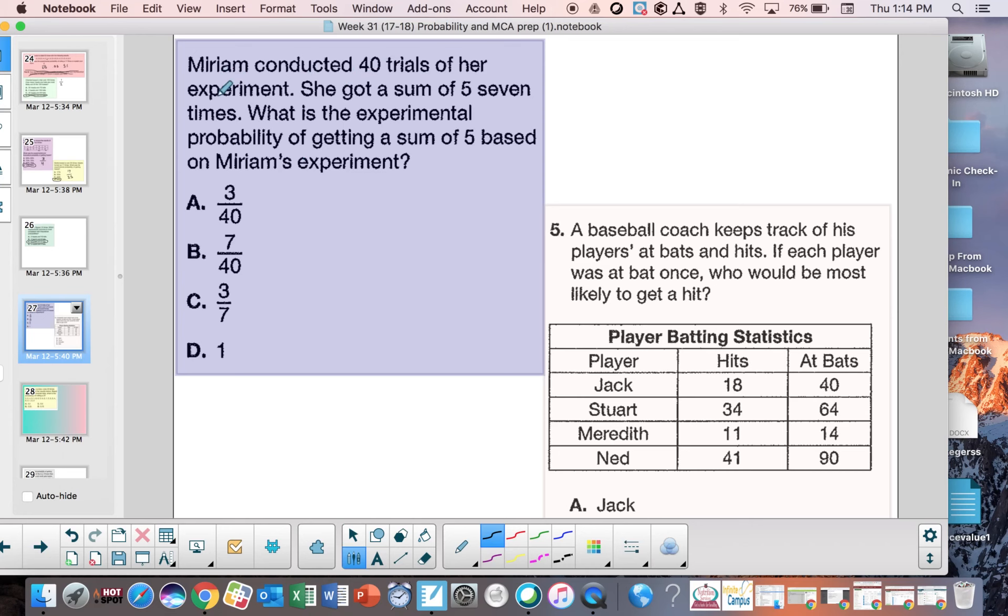Miriam conducted 40 trials of her experiment. She got a sum of five seven times. What is the experimental probability of getting a sum of five based on Miriam's experiment? Well, she did 40 trials, so I know that's the total number of times it happened. It says here, I want to read carefully, she got a sum of five, but it happened seven times. That's the key. So the experimental probability of getting a sum of five based on the experiment is seven out of 40. And that is B.